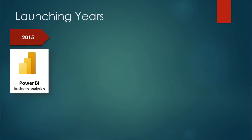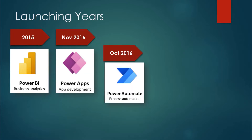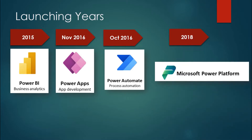Now let's look at the evolution of the platform — how and when it was launched. Power BI was the first component, with general availability in 2015. Power Apps was launched in November 2016, and Power Automate was launched in October 2016. Microsoft then launched the concept called Microsoft Power Platform, officially combining Power BI, Power Apps, and Power Automate together in 2018.